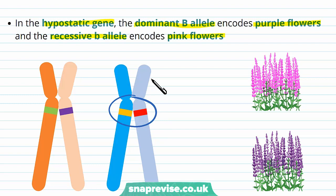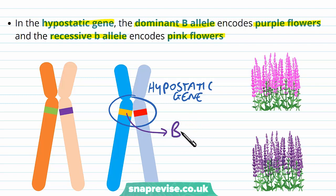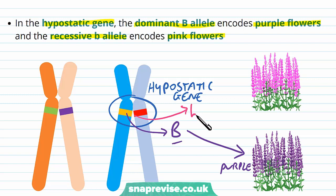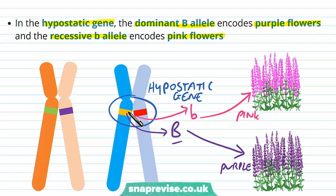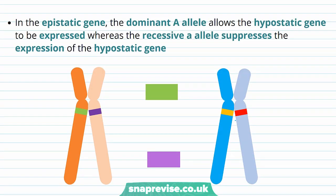The hypostatic gene B can be blocked. If there's a capital B (dominant allele), we get purple flowers; if there's a little b (homozygous recessive), we get pink flowers. Remember: a dominant allele will always express itself with one or two copies, while a recessive allele needs two copies to be expressed. The epistatic gene A, when dominant (capital A), allows the hypostatic gene to be expressed. But if it's homozygous recessive (two little a's), it suppresses the hypostatic gene's expression.